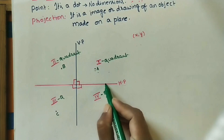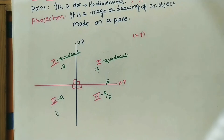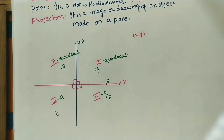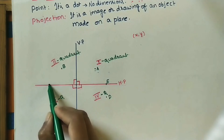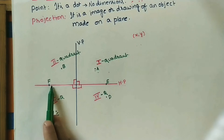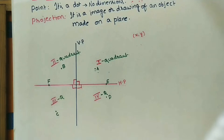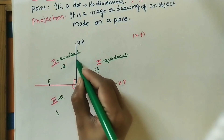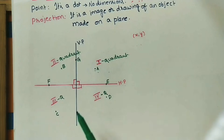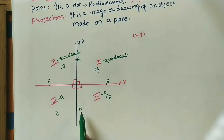Now I am taking point E — it is on the HP and in front of VP. Point F is on the HP and behind VP. Point G is on the VP and above the HP. Point H is below HP and on the VP.